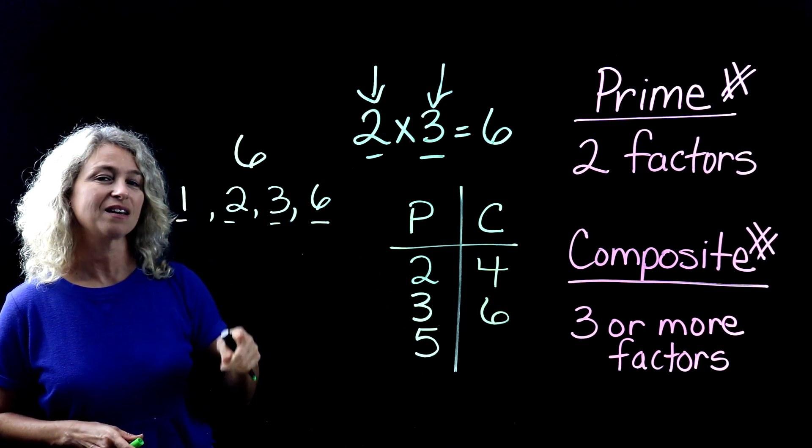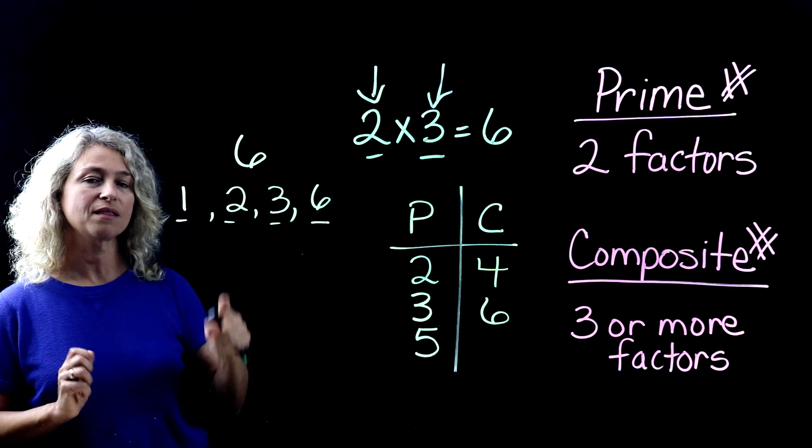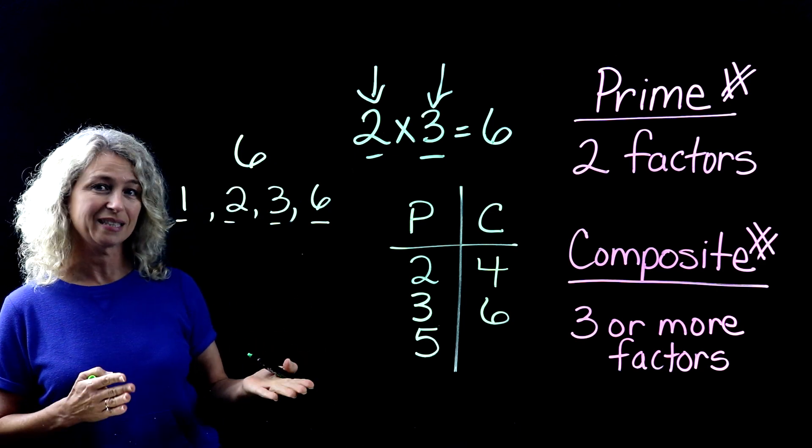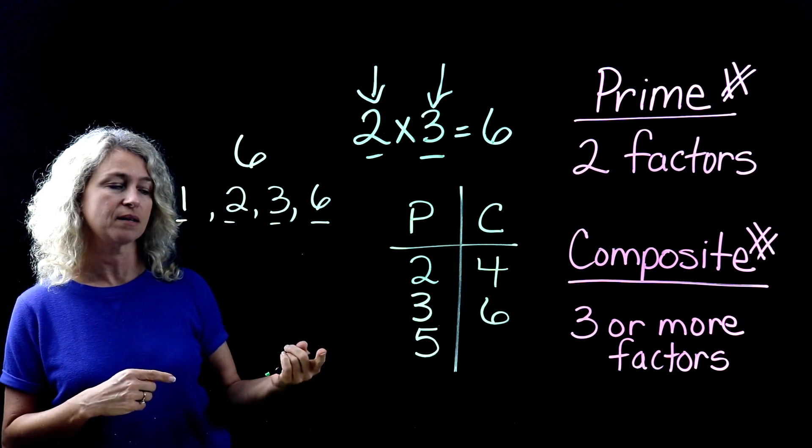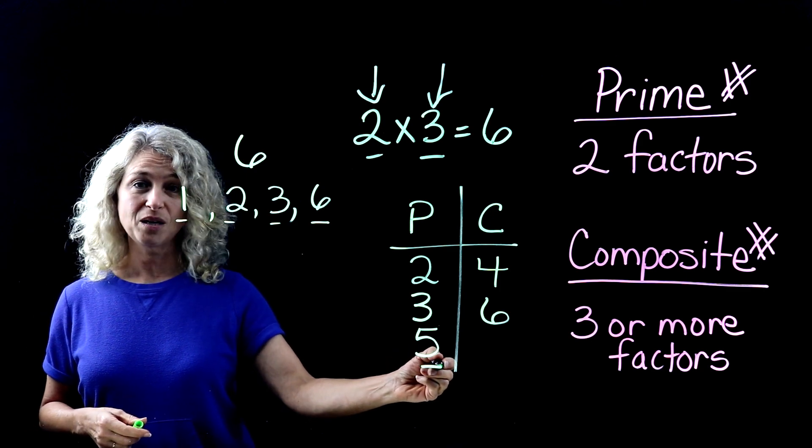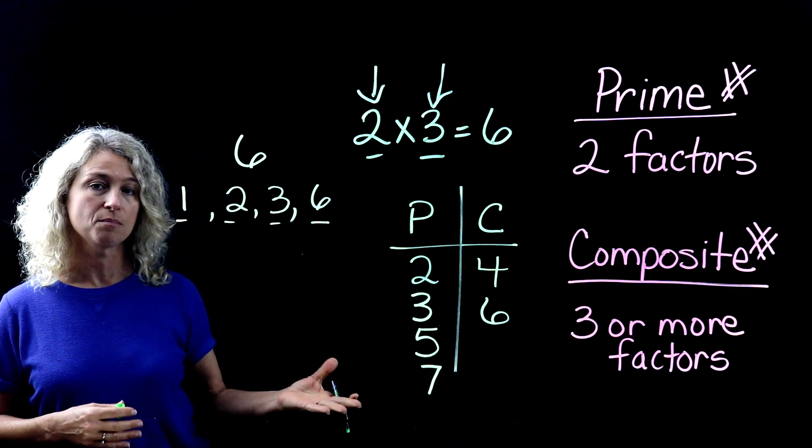Now, I bet you're getting the hang of this. I bet you already can think of seven and know that there's no other way to get to seven but one times seven. So you would be correct if you were thinking that. It is a prime number.